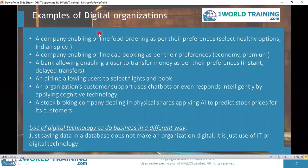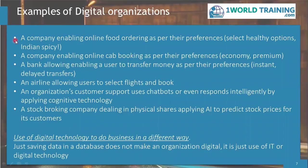Let us look at some examples of digital organizations. You will find this under supporting materials in the learning management system. A company enabling online food ordering as part of their preferences, meaning the customers may order food as per their preferences — for example, they may be able to select healthy options or Indian spicy food. Another example: a company enabling online cab booking as per the customer's preferences like economy, premium, etc.